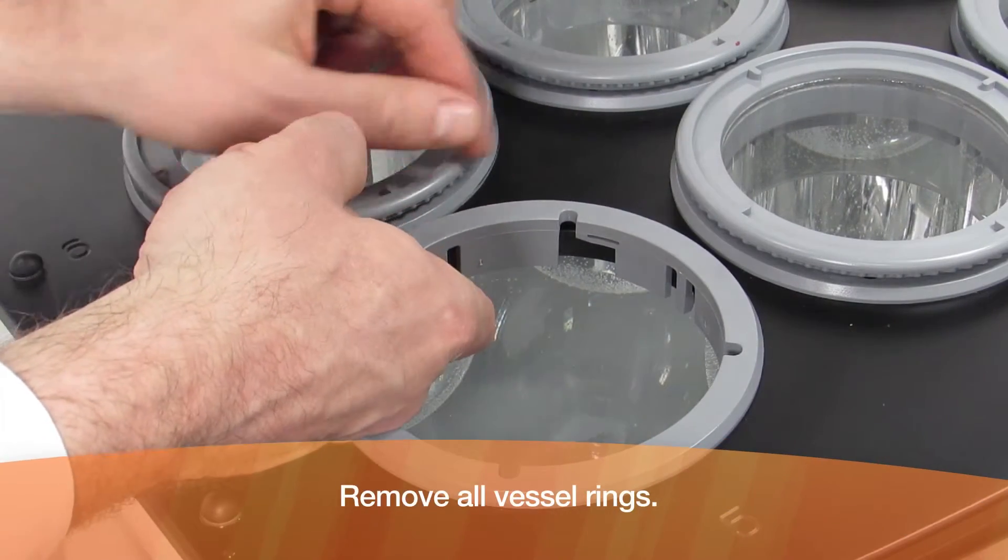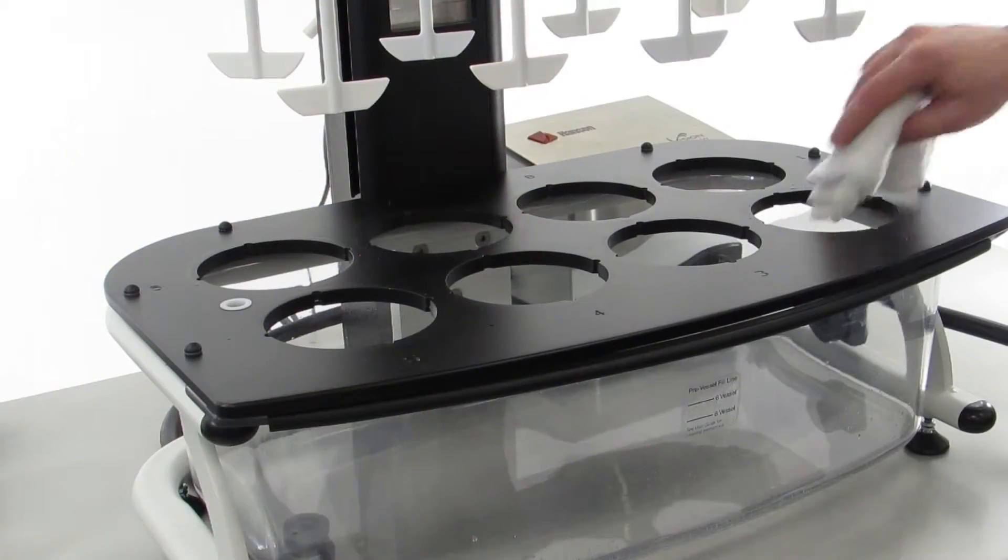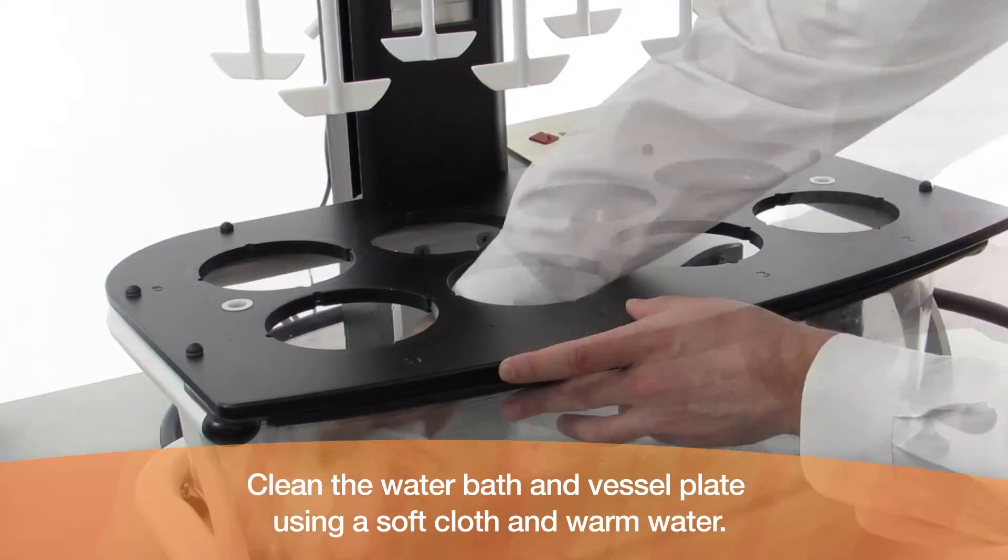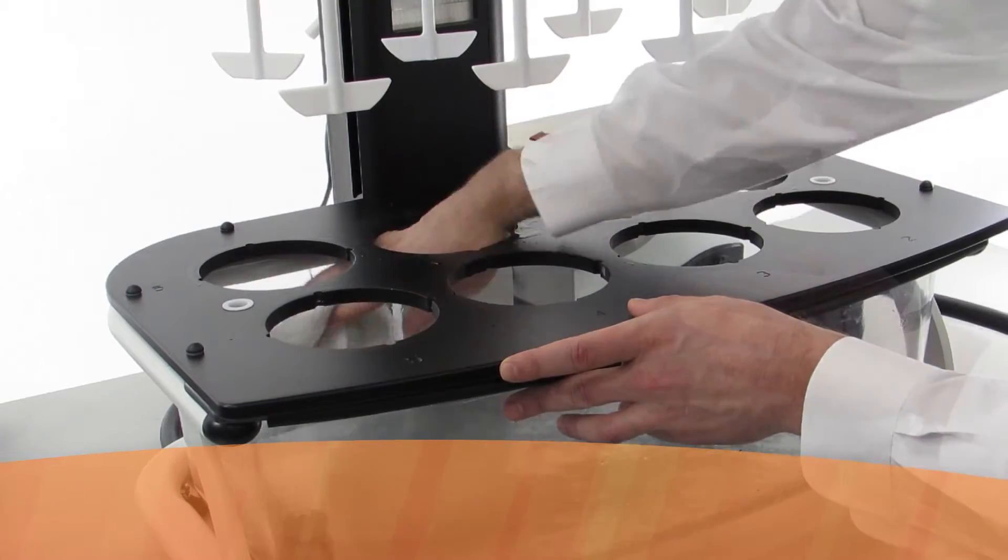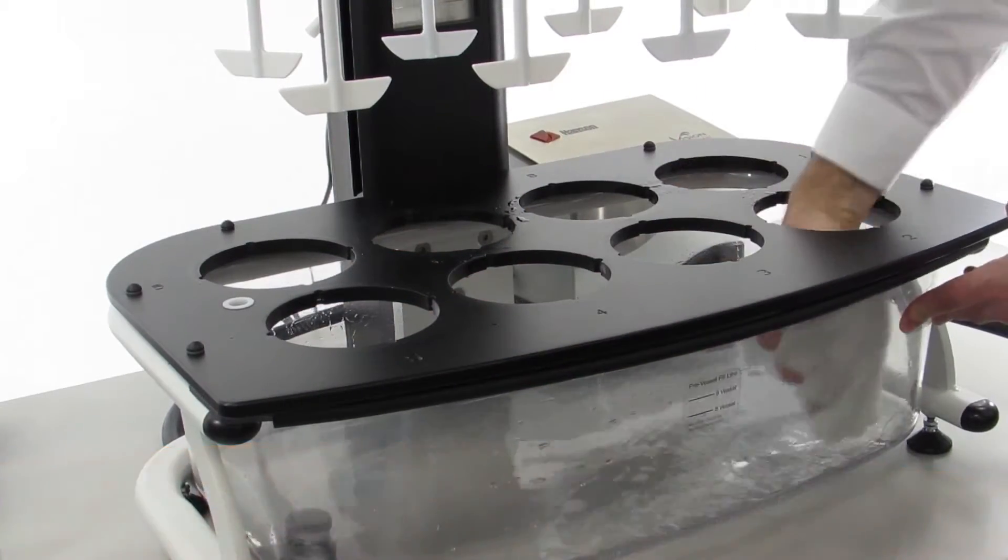Remove all vessel rings. Clean the water bath and vessel plate using a soft cloth and warm water. Do not use chemicals or abrasives of any kind.